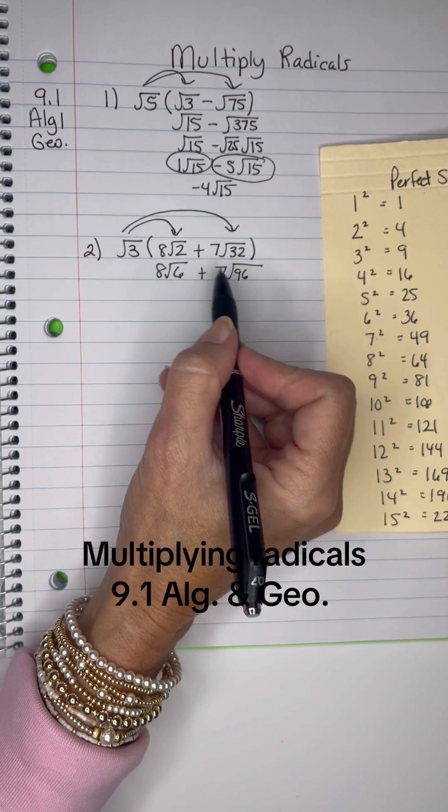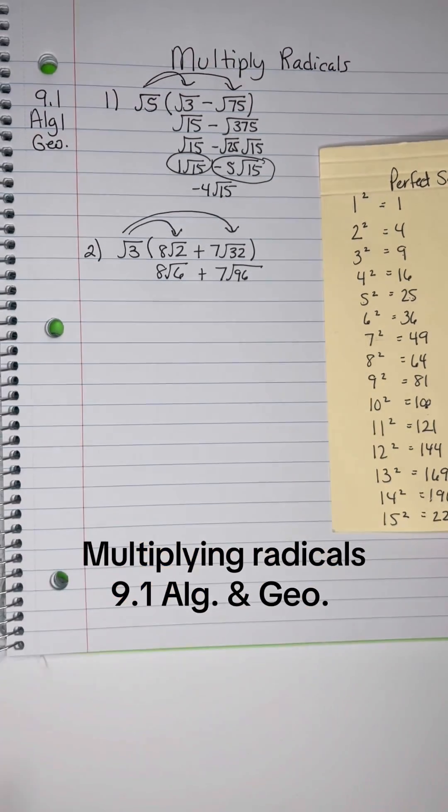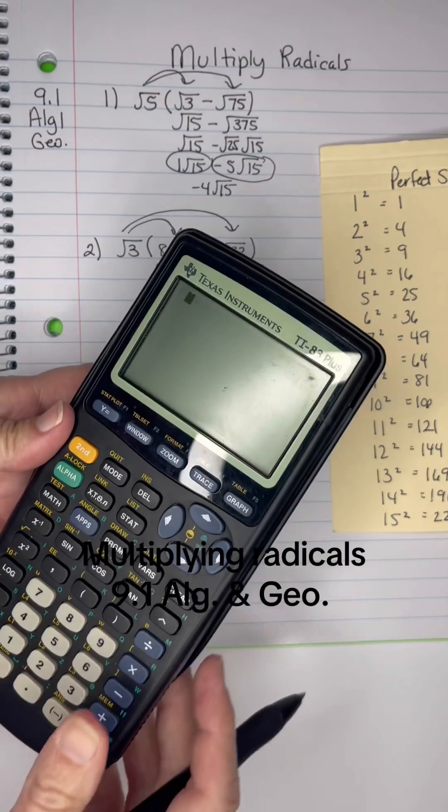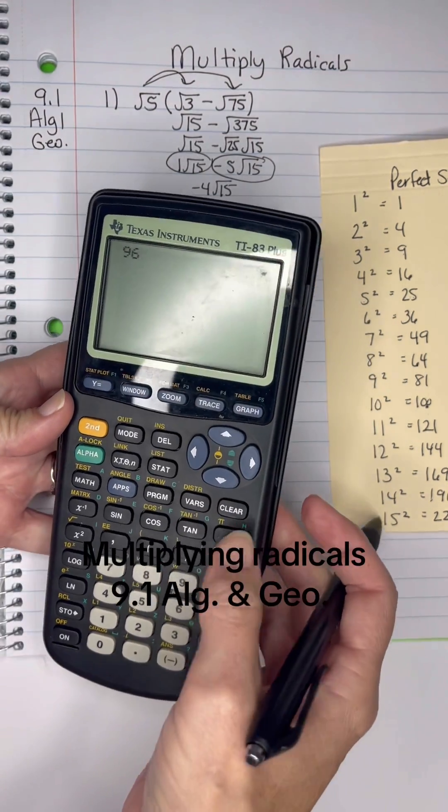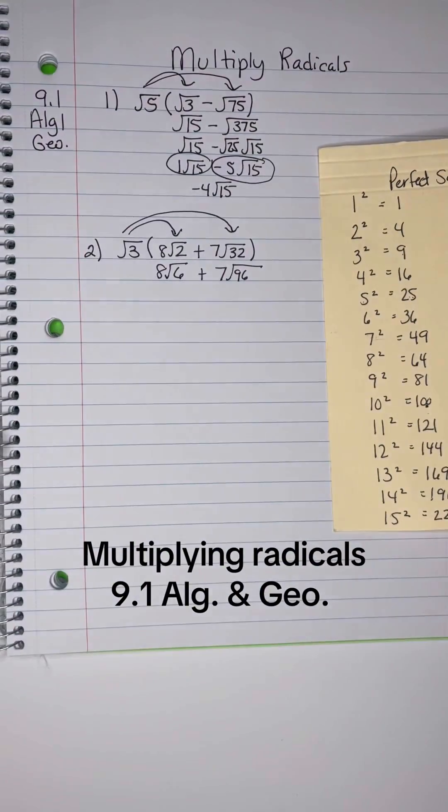Odds are 6 goes into it. So let's divide 96 by 6 and see if the answer happens to be in my perfect square list. 96 divided by 6 is 16, and it is in my list. So that's perfect.